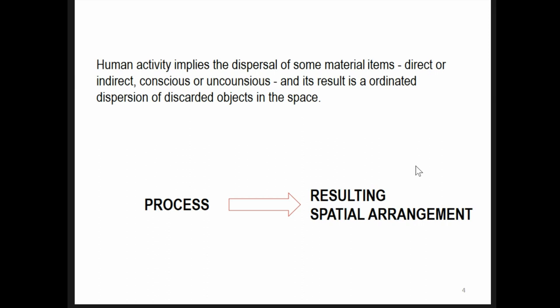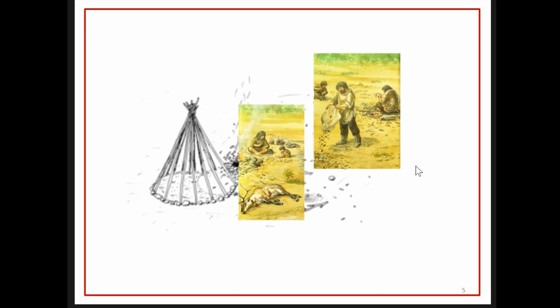We could say that human activity implies a dispersal of material items and its result is an ordinated dispersion of discarded objects in space. It is ordinated since human activity is rarely randomly performed in space. Therefore, when we are archaeologically observing this, it is because this once happened.